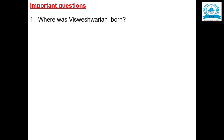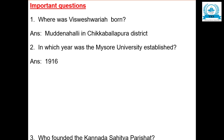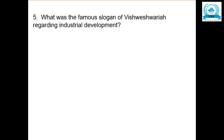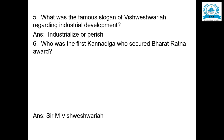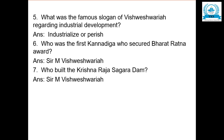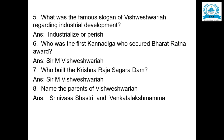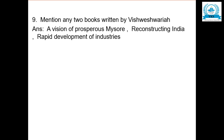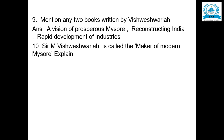Now let us see some important questions. Where was Vishweshwaraya born? Muddenahalli in Chikkaballapur district. In which year was Mysore University established? 1916. Who founded the Kannada Sahitya Parishat? Sir M. Vishweshwaraya. Name the bank established by Vishweshwaraya: Mysore Bank. What was his famous slogan regarding industrial development? 'Industrialize or Perish.' Who was the first Kannadiga to receive the Bharat Ratna Award? Sir M. Vishweshwaraya. Who built the KRS Dam? Sir M. Vishweshwaraya. Name his parents: Srinivasa Shastri and Venkata Lakshmamma. Mention any two books: 'A Vision of Prosperous Mysore,' 'Reconstructing India.' The question on why he is called maker of modern Mysore is answered throughout the video.